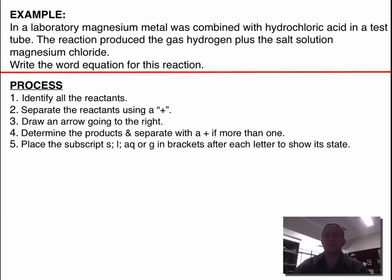The first thing we need to do is identify the reactants. We look up in the example and try and find what things were put together at the beginning. If we look closely, we can see, and this will be underlined in blue, that magnesium metal was joined with hydrochloric acid.